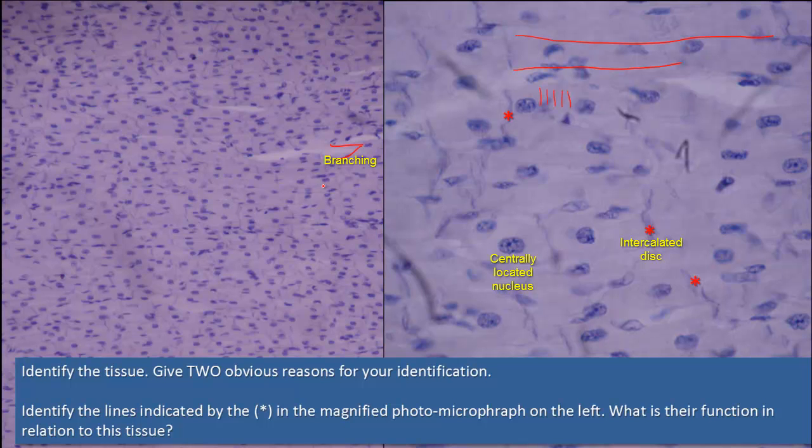The intercalated discs are involved in conducting electrical impulses through the heart in order to support the synchronized contraction of cardiac tissue. In addition to anchoring junctions, the intercalated discs contain gap junctions. These are also called communicating junctions that allow the action potential to spread between cardiac muscle cells, because these gap junctions allow the passage of ions between cells, producing depolarization of the heart muscle as a single functional organ or as a syncytium.